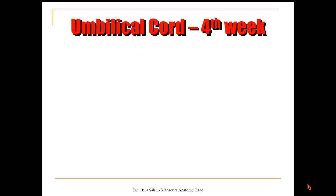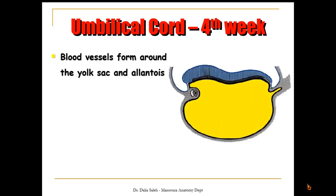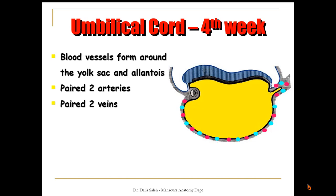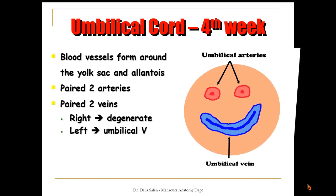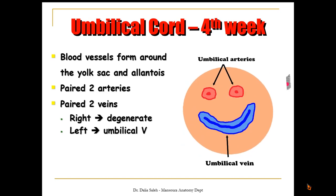During the fourth week of development, blood vessels form around the yolk sac and the allantois. The yolk sac is covered by a special type of mesoderm called the splanchnic mesoderm. Angioblastic cells, or blood-forming cells, appear in this area and form blood vessels. Around the allantois, two arteries and two veins form. The right umbilical vein degenerates later after remodulation of the venous system, while the left one persists as the umbilical vein. So eventually we have two umbilical arteries and one umbilical vein.